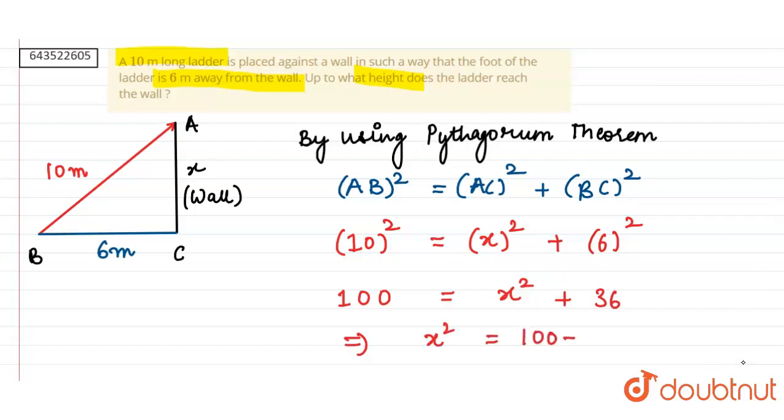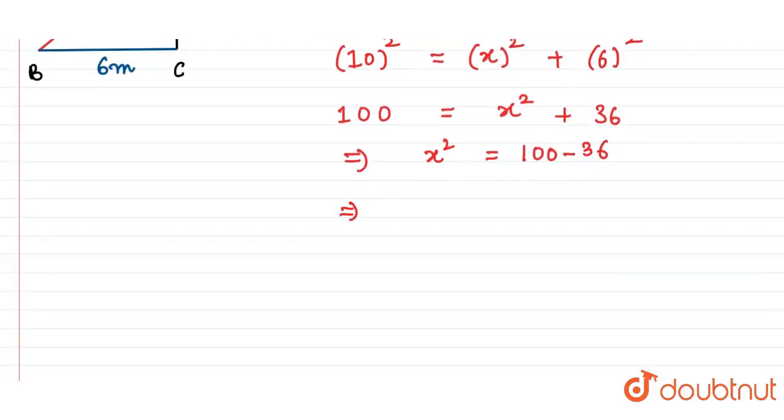Therefore we get x squared equals 64. This implies x equals plus or minus square root of 64. Since the height of the wall can never be negative, therefore we take the positive value and discard the negative value.